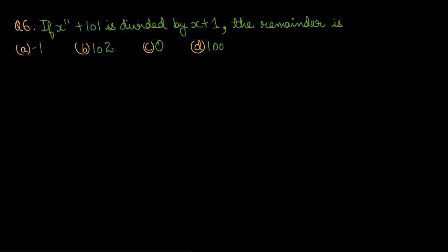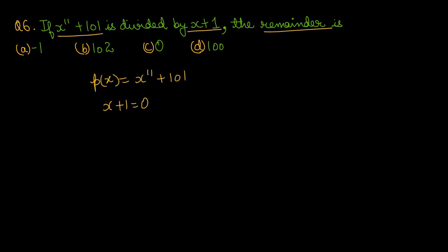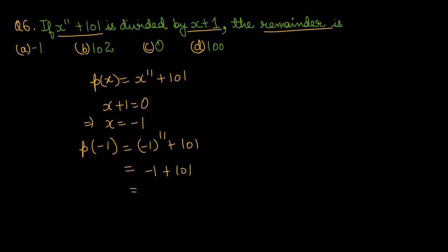Question number 6: if x power 11 plus 101 is divided by x plus 1, the remainder is. Polynomial है x^11 + 101, इसको x plus 1 से divide करना है। x plus 1 = 0 → x = -1। Power 11 odd है, तो (-1)^11 = -1। Result: -1 + 101 = 100। जो remainder आया वो है 100। Option number D is the right one.